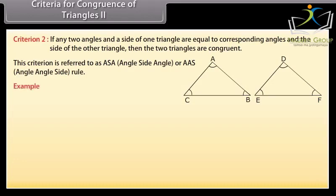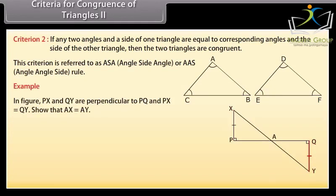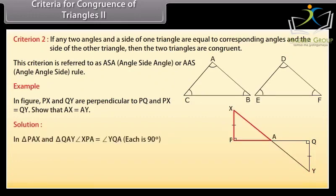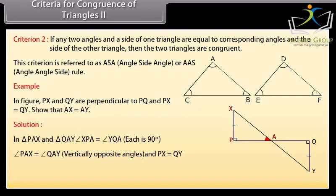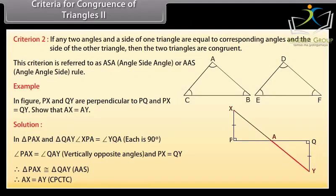Let's solve an example. In the figure, PX and QY are perpendicular to PQ, and PX is equal to QY. Show that AX is equal to AY. Solution: In triangle PAX and triangle QAY, angle XPA is equal to angle YQA because each is 90 degrees. Angle PAX is equal to angle QAY because these are vertically opposite angles. And PX is equal to QY. Therefore, by AAS congruence rule, triangle PAX is congruent to triangle QAY. Therefore, AX is equal to AY — CPCTC.